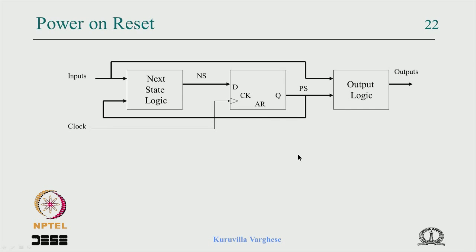This slide covers power-on reset. The state machine structure has flip-flops which give the present state, and that combined with the input gives the next state via next state logic. The present state is decoded to produce outputs — some outputs are a function of the present state only, and some are a function of both present state and input. We will look at the difference between Moore and Mealy outputs.